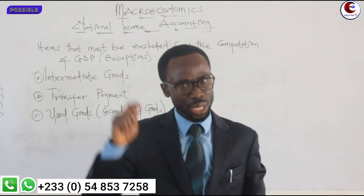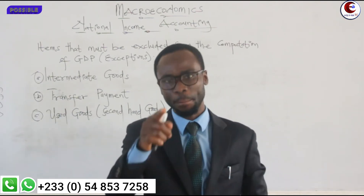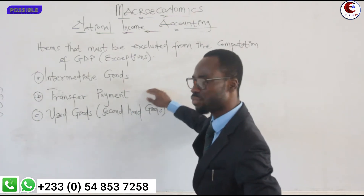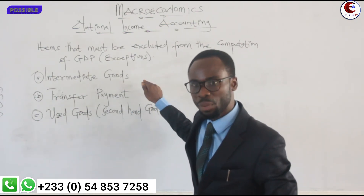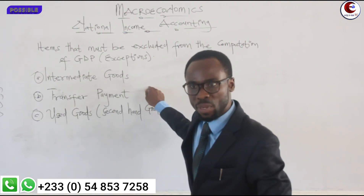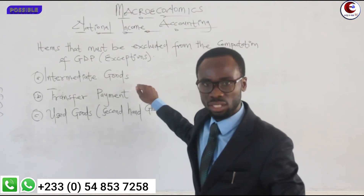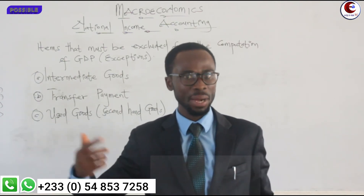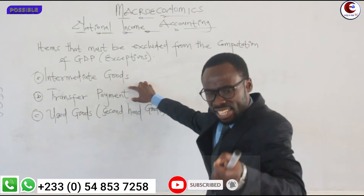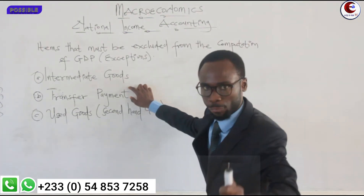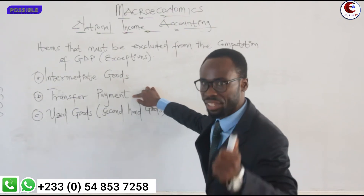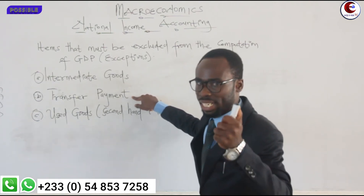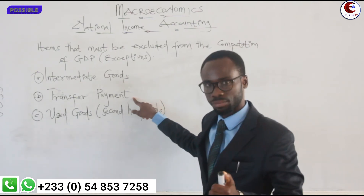This is because the transfer payment is going to be used in the computation of personal income. The formula for the computation of personal income is NNP — net national product — at factor cost, plus all incomes received but not earned, minus all incomes earned but not received. Transfer payment is an income received but not earned; we have not worked for it but we received it. So we use it under the computation of personal income, but under the computation of national income — the net national product or net national income at factor cost — we are going to subtract it.